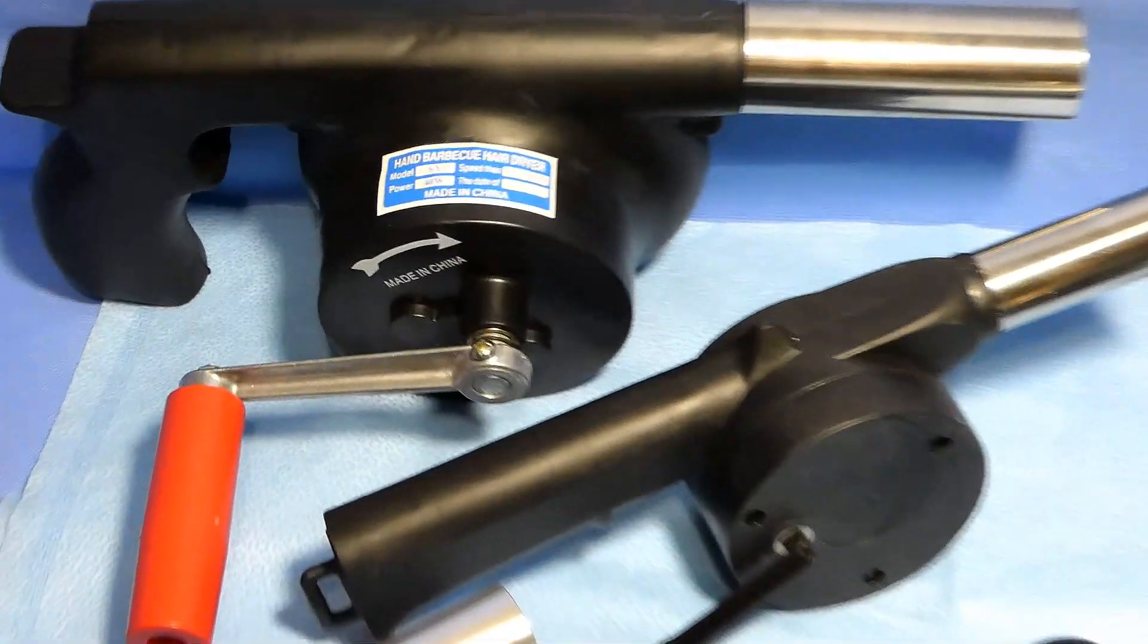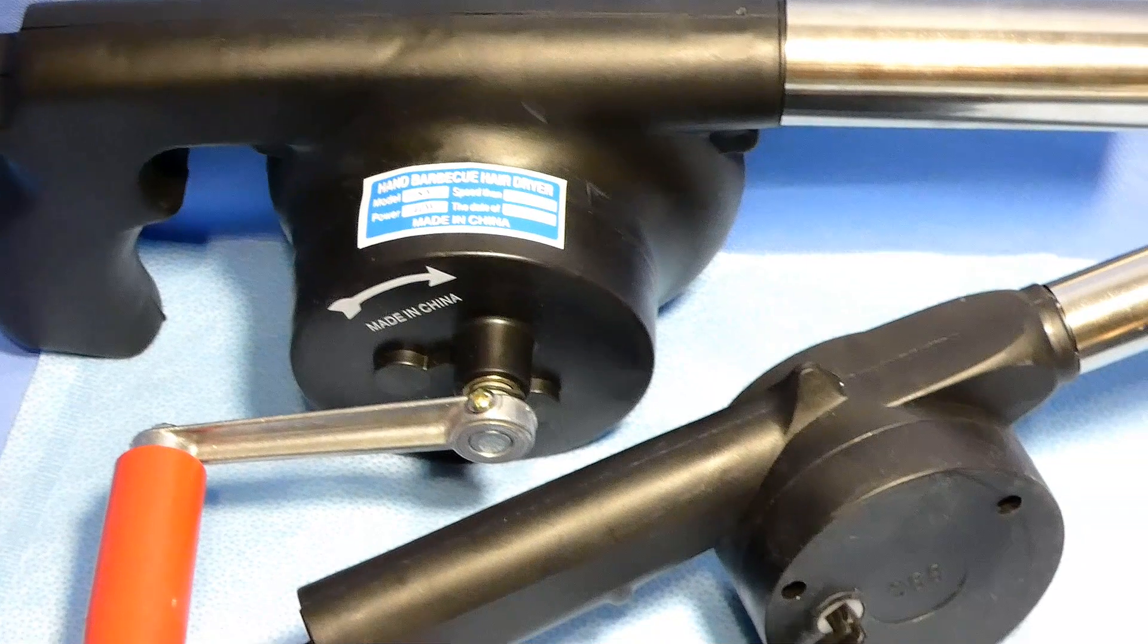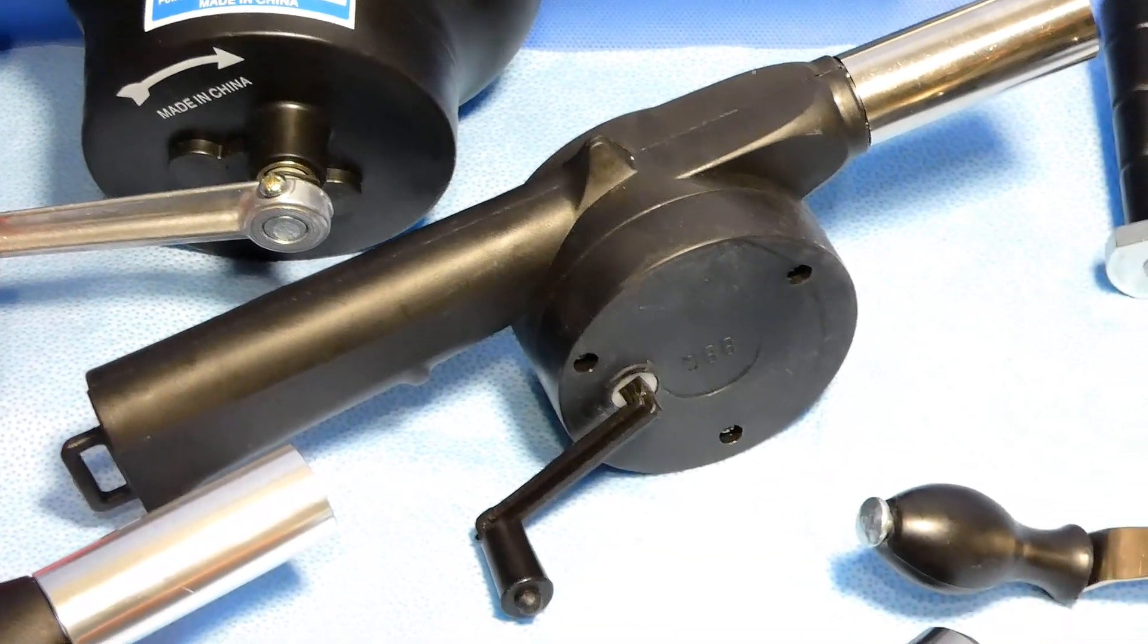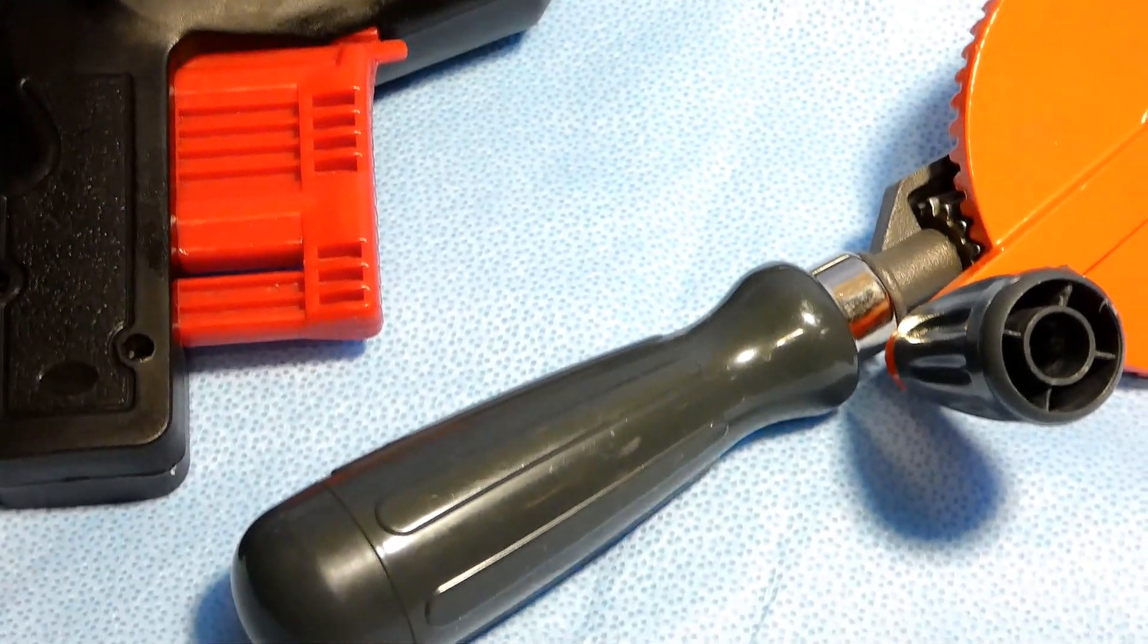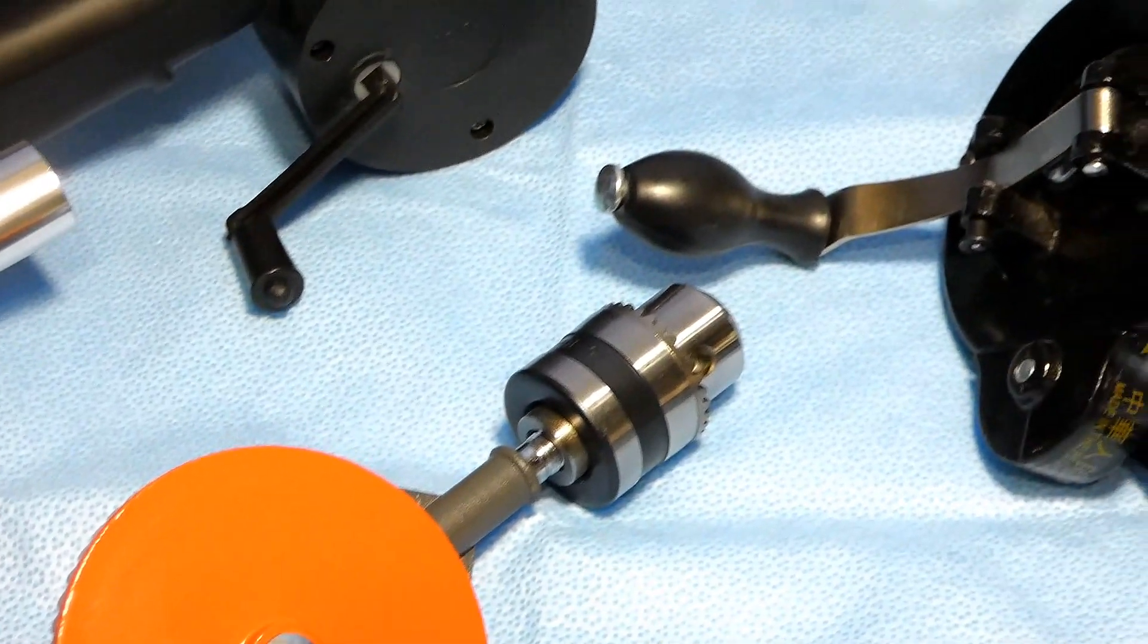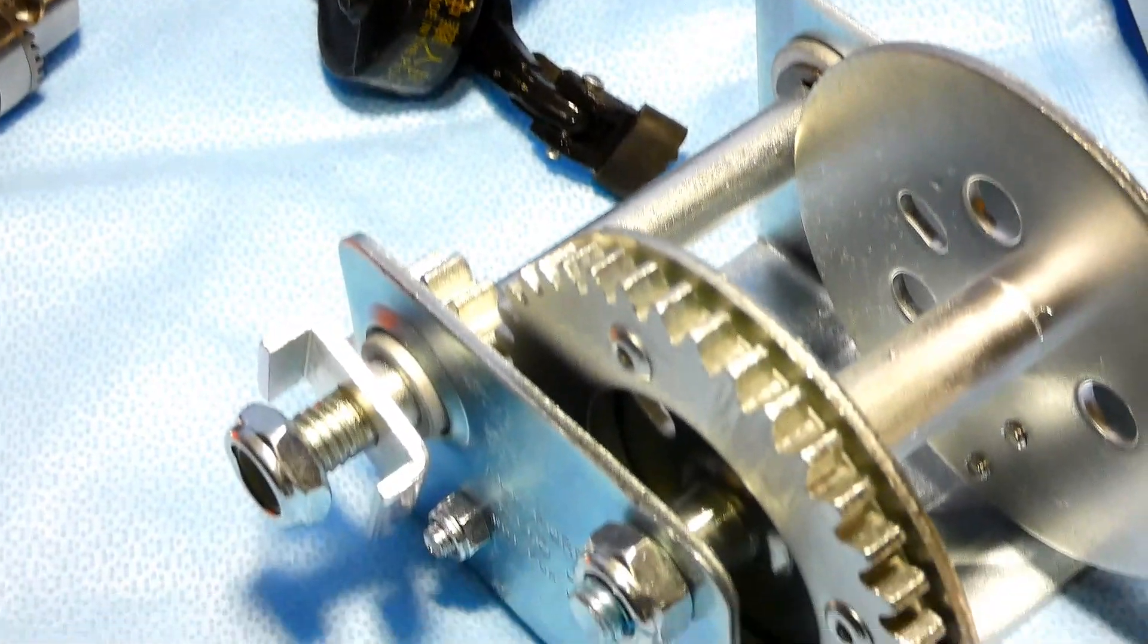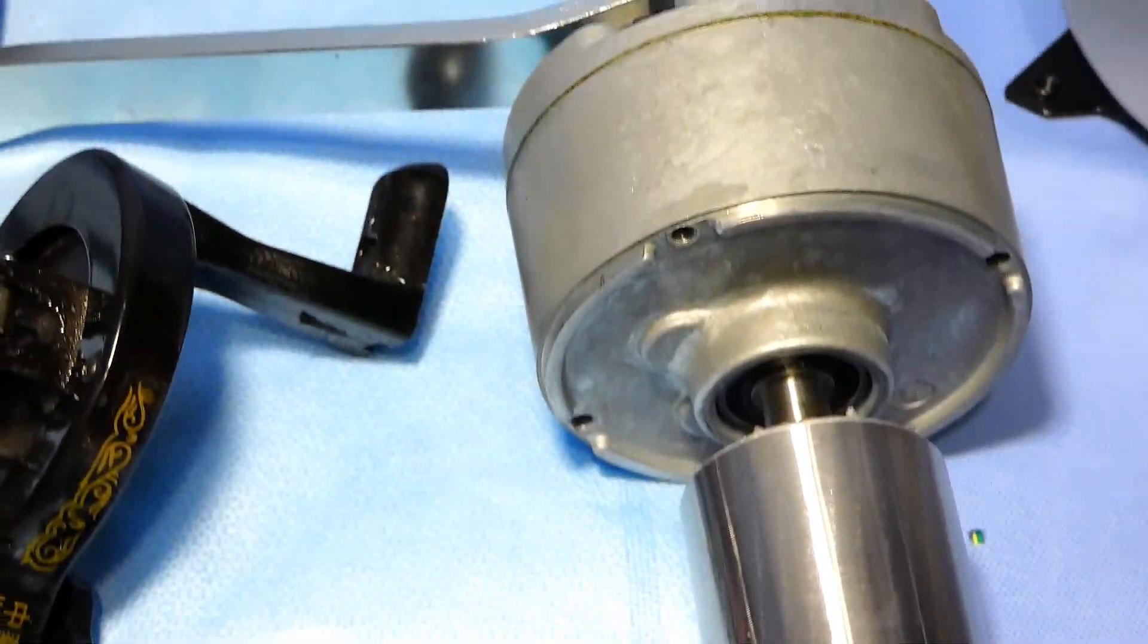Hi everyone, these are some hand crank collections. They're used for different purposes like barbecue blowers, hand drills, sewing machines, and manual winches. Today I'm going to make a hand crank generator using one of these hand gears. Let's start.